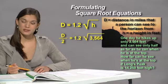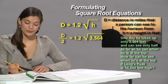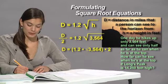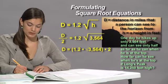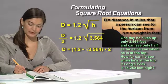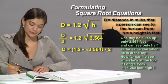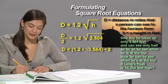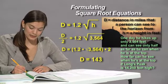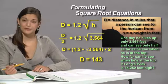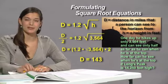We just want to solve for d. So we multiply both sides by 2 and get d equals 1.2 times the square root of 3,564, all of that times 2. We plug that into a calculator and get d equals 143. That means that David can see about 143 miles when he's at the top of Long's Peak.